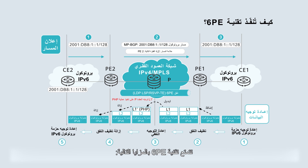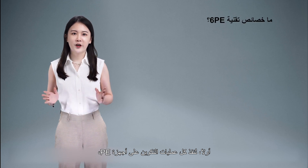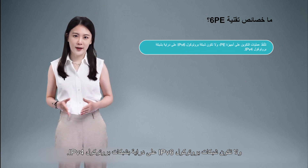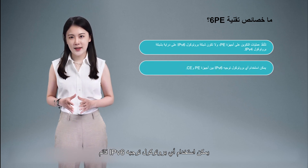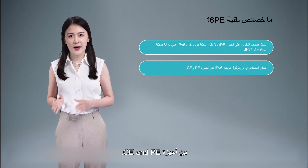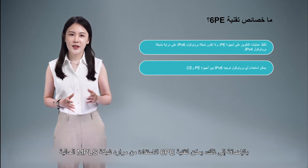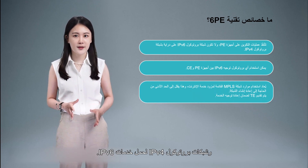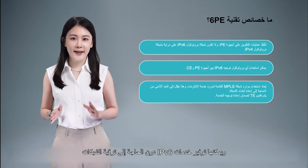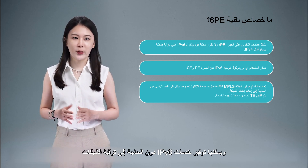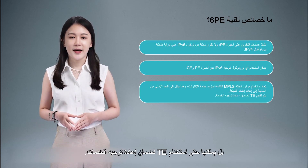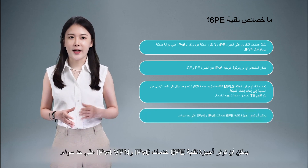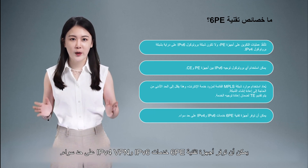6PE has the following advantages. First, all configurations are performed on PEs, and IPv6 networks are unaware of IPv4 networks. Any existing IPv6 routing protocol can be used between PEs and CEs. In addition, 6PE can leverage existing MPLS network resources and IPv4 networks to carry IPv6 services. It can provide IPv6 services without requiring network upgrade or reconstruction, and can even use TE to ensure service forwarding. 6PE devices can provide both IPv6 and IPv4 VPN services.